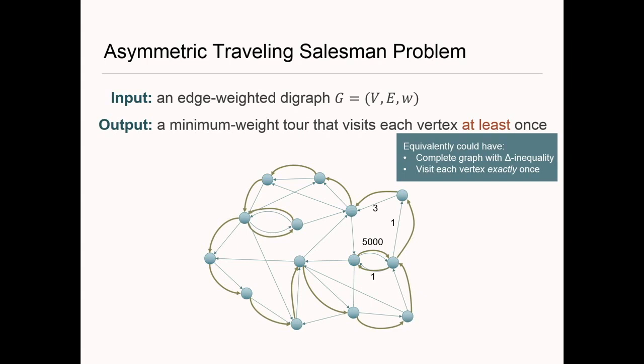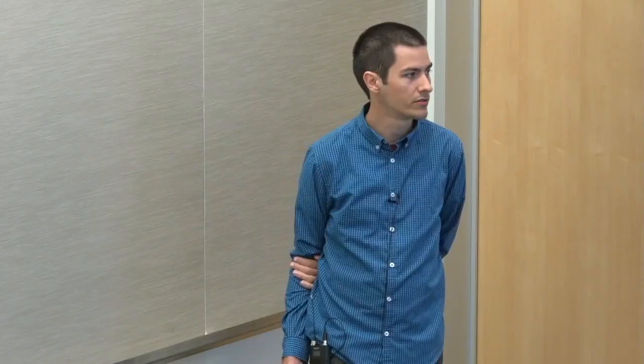Formally in ATSP, we're given an edge-weighted digraph and want a minimum-weight tour that visits each vertex at least once. Equivalently, we can say we want to visit each vertex exactly once, and to get an approximation we need to assume it's a complete graph with the triangle inequality. We prefer the 'at least once' version.